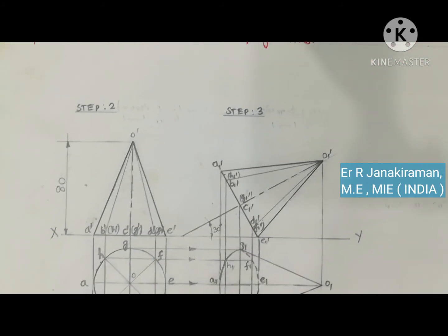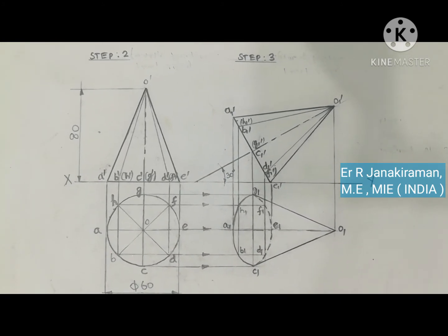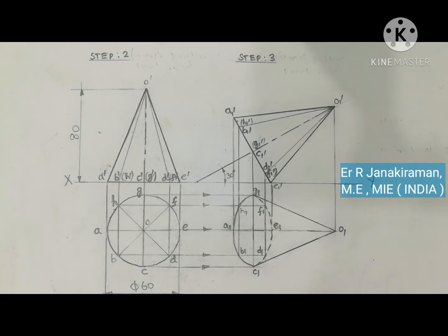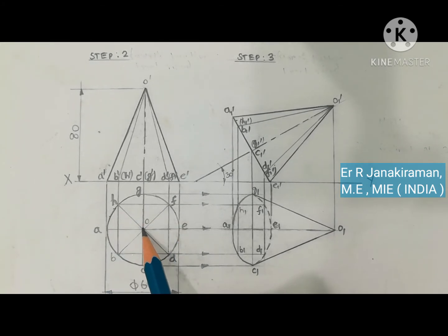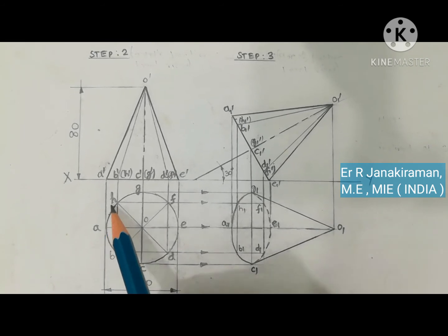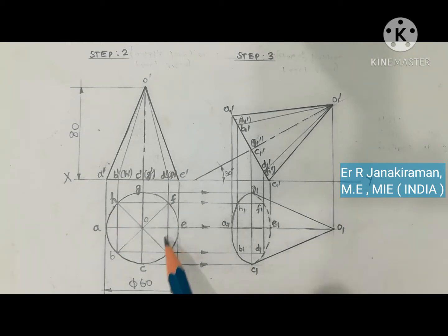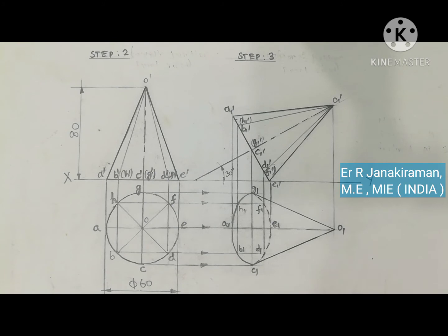That is called the reduced scale. For example, diameter is given as 60 mm. This diameter circle is drawn and radius will be 30 mm. So radius will be half of diameter.